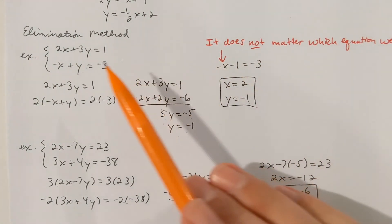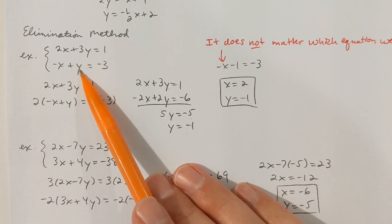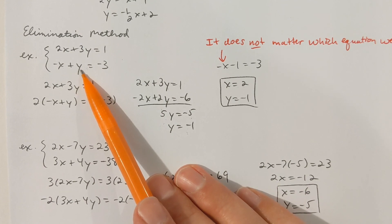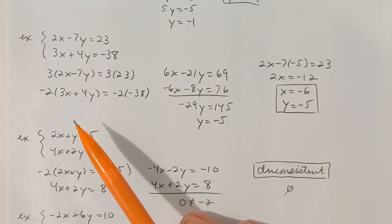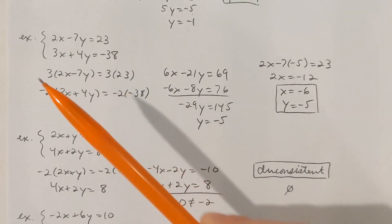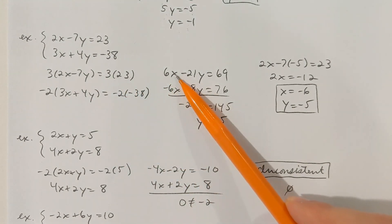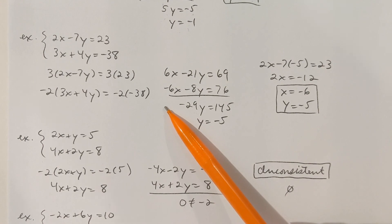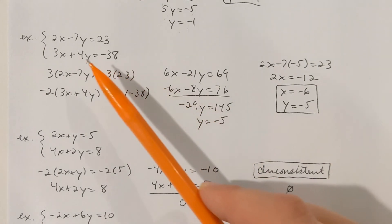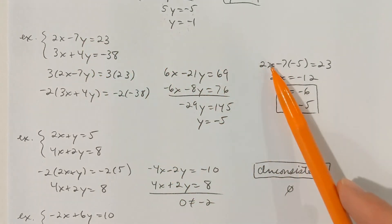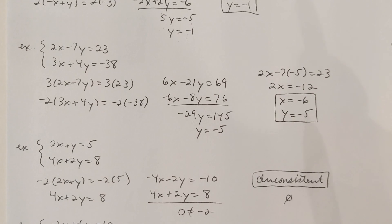It doesn't matter which variable you eliminate. I could have eliminated y first and found x first — to eliminate y I would multiply the bottom equation by negative 3, making 3y minus 3y equal 0. Sometimes we have to work with both equations in the elimination method. In the next example, I multiply the top equation by 3 and the bottom equation by negative 2 to eliminate x. When I add these together, 6x minus 6x is 0. Solving gives y equal negative 5, and plugging back in gives x equal negative 6. So x equal negative 6, y equal negative 5 is the solution.